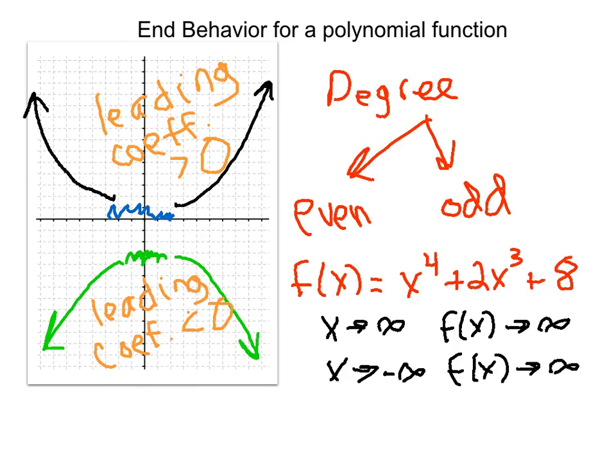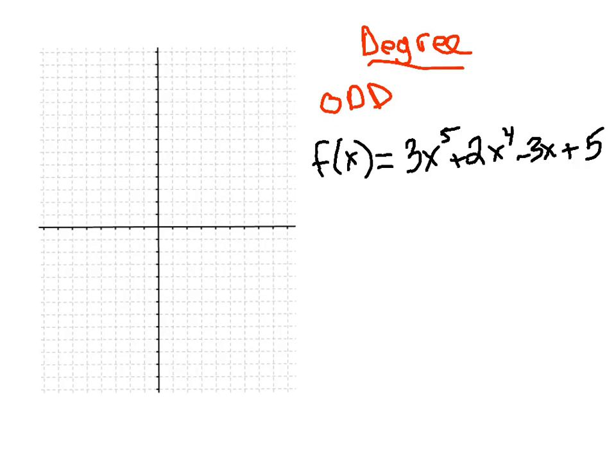Now let's look at a graph where we have an odd degree. When we have a polynomial function where the leading term is odd — here we have degree five, then four, then one, then zero — the degree of this polynomial is five, which is odd. That's all we need to know. For a polynomial function, to describe end behavior, all we need to look at is the leading term, the largest term in terms of degree.